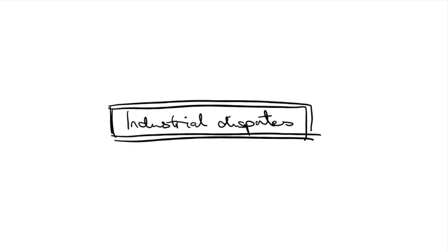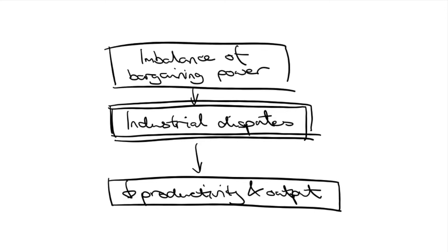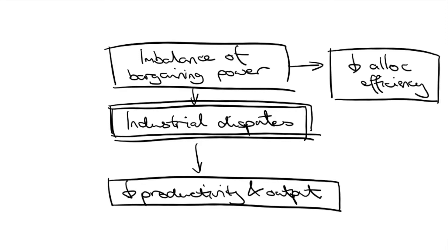Let's start with looking at dispute resolution. Industrial disputes between employers and employees can be costly to the economy if there's not an efficient resolution process. Industrial disputes can come in the form of strikes and temporary closures of workplaces, leading to a loss of productivity and output. High frequency of disputes could also be indicative of an imbalance of bargaining power between employees and employers, which hinders allocative efficiency, as this means labor resources are not correctly priced.